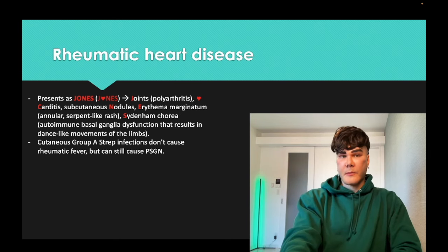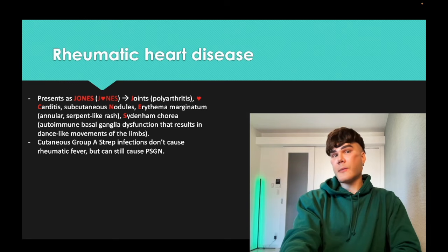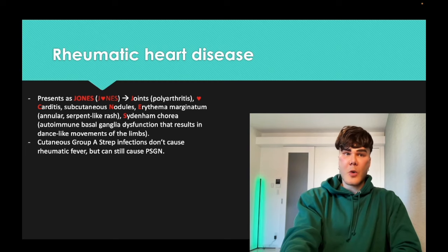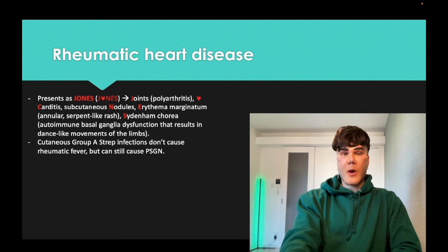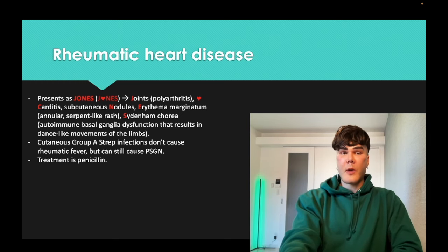Important: cutaneous strep such as impetigo, erysipelas, and cellulitis can cause PSGN — type 3 hypersensitivity, red urine one to three weeks after the infection — but do NOT cause rheumatic heart disease. So a kid with impetigo for seven days who gets red urine is PSGN, not rheumatic heart disease. Penicillin is the treatment for rheumatic heart disease and to prevent it in patients with pharyngitis.